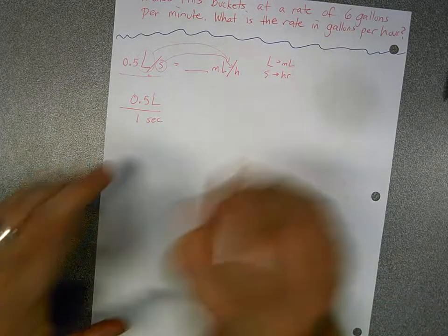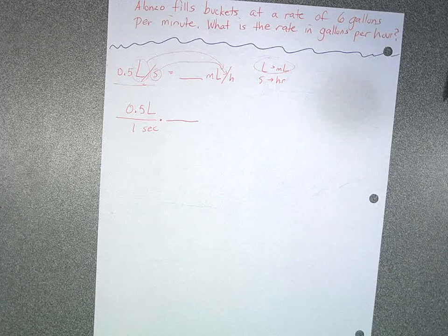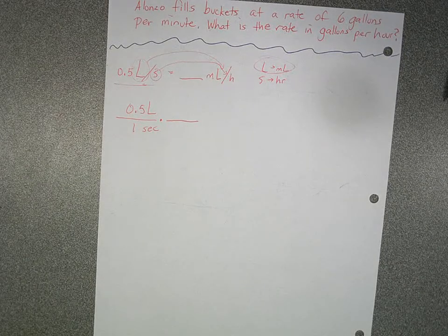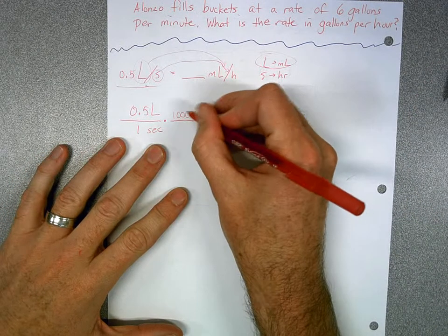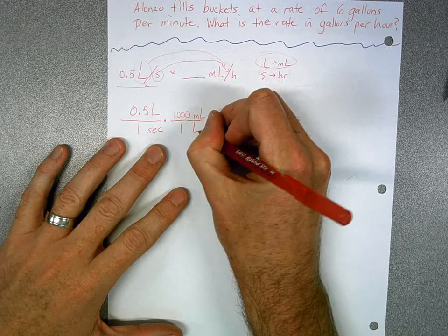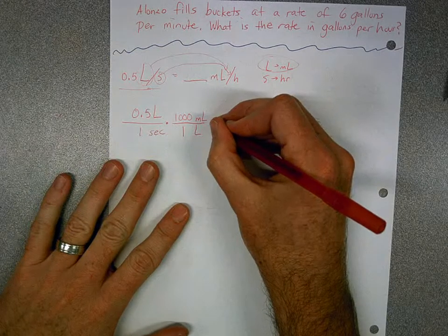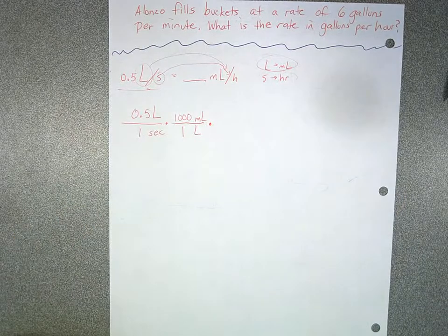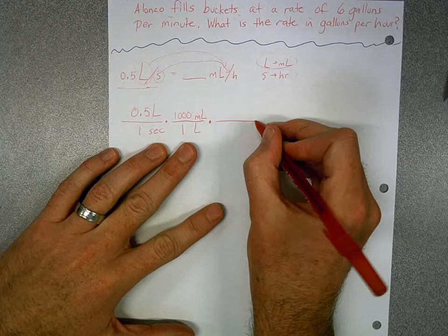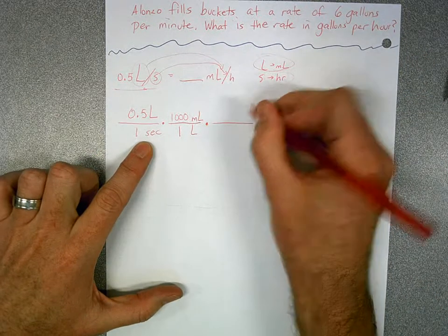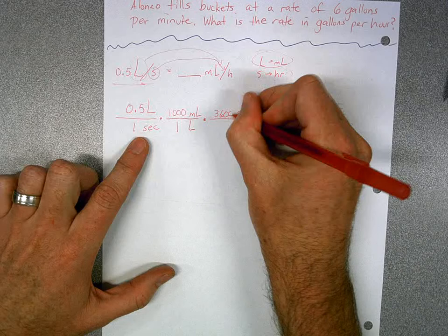So there are our two pieces of information — we'll write two unit ratios based on those two things. Doing one at a time so we're not overwhelmed: first, liters and milliliters. How many milliliters are in a liter? 1,000. So I put 1,000 milliliters over one liter. Now I do it again with seconds and hours — we know there are 3,600 seconds in one hour. Since seconds are on the bottom of our original rate, I put them on top here, so 3,600 seconds over one hour.